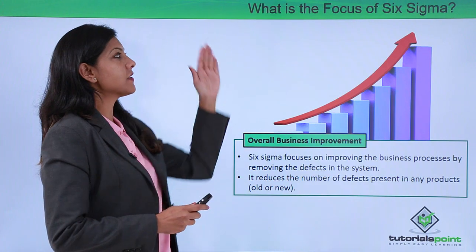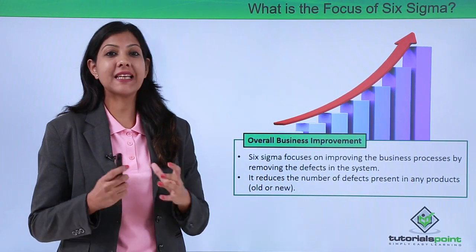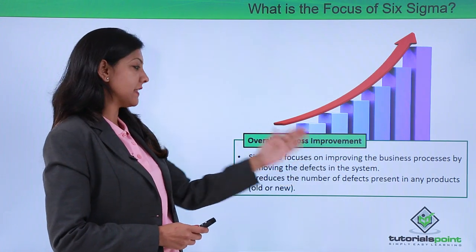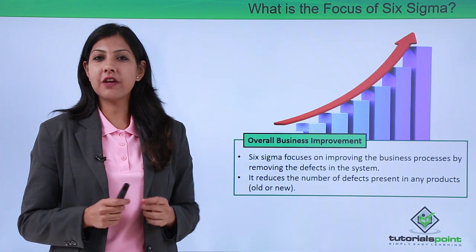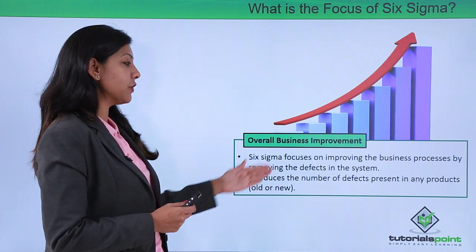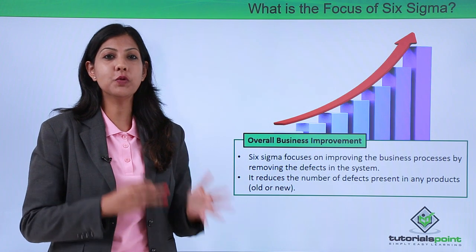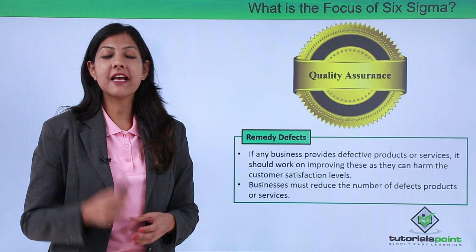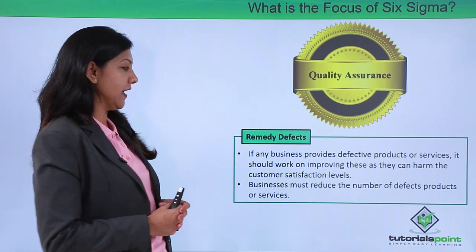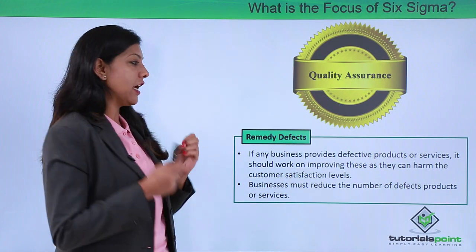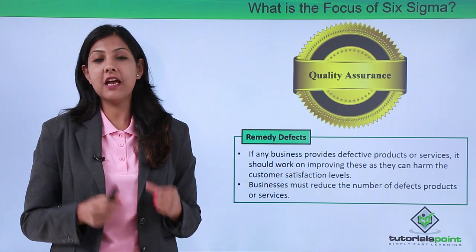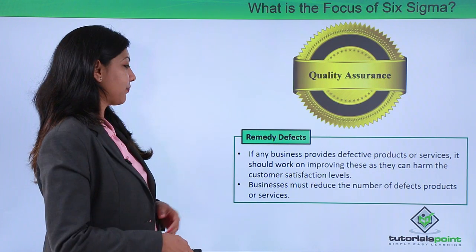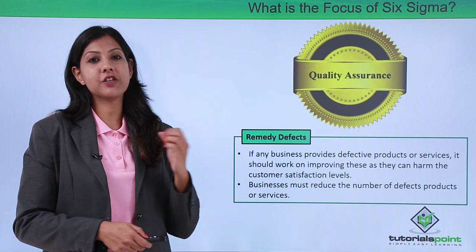Now, what is the focus of Six Sigma? First, it helps with overall business improvement — Six Sigma focuses on improving business processes by removing defects from the system. Each defect removed helps improve productivity and reduces the number of defects in products, whether new or old. Another focus is the remedy of defects — wherever there are defects in products or services, Six Sigma helps remove or remedy them. If a business provides defective products or services, it can harm customer satisfaction levels and result in a bad reputation in the market.